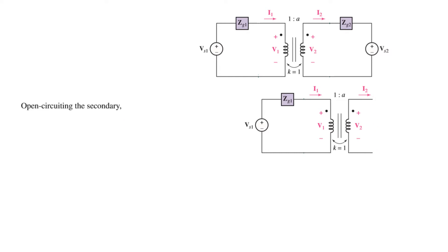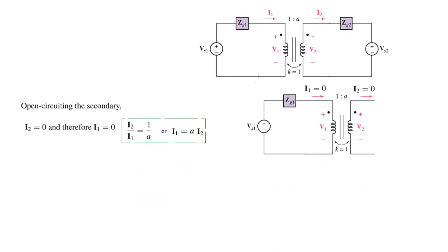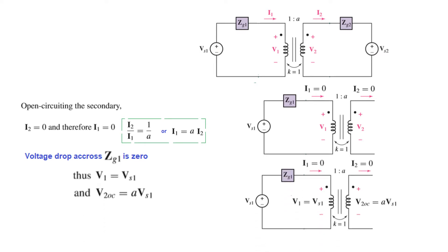Opening the secondary means I2 will be 0. Since inductors L1 and L2 are considered to be of very high, effectively infinite value, I1 will also be 0. When inductances are very high and I2 is 0, I1 is also 0, which means there will be no voltage drop across ZG1.